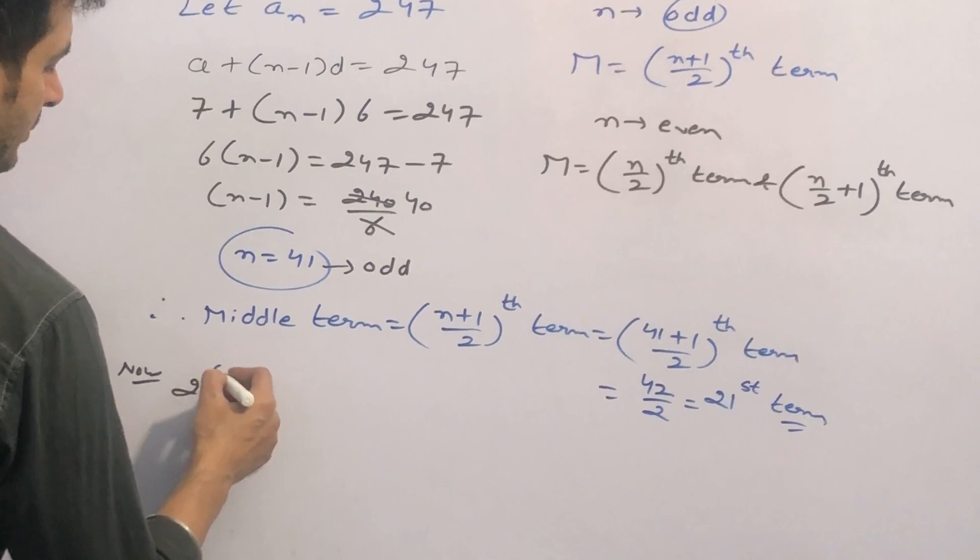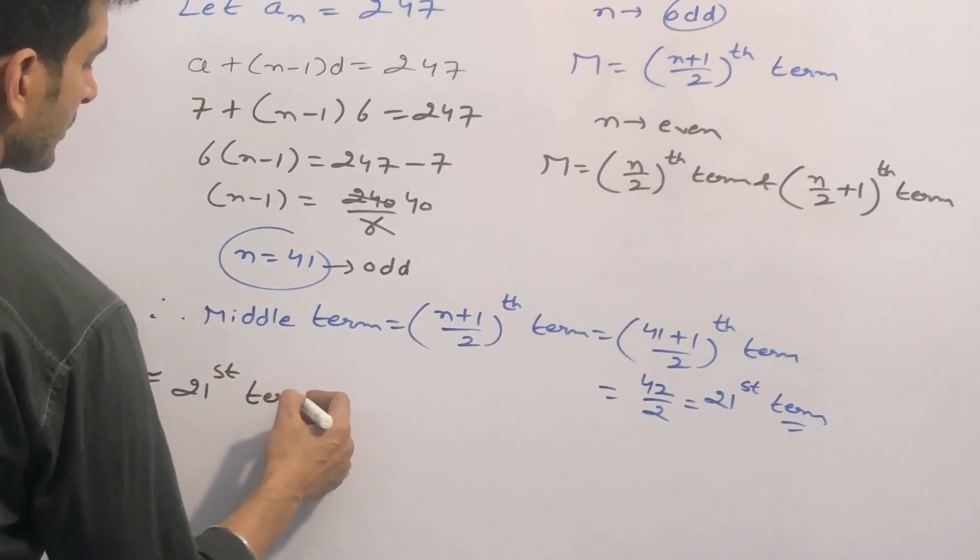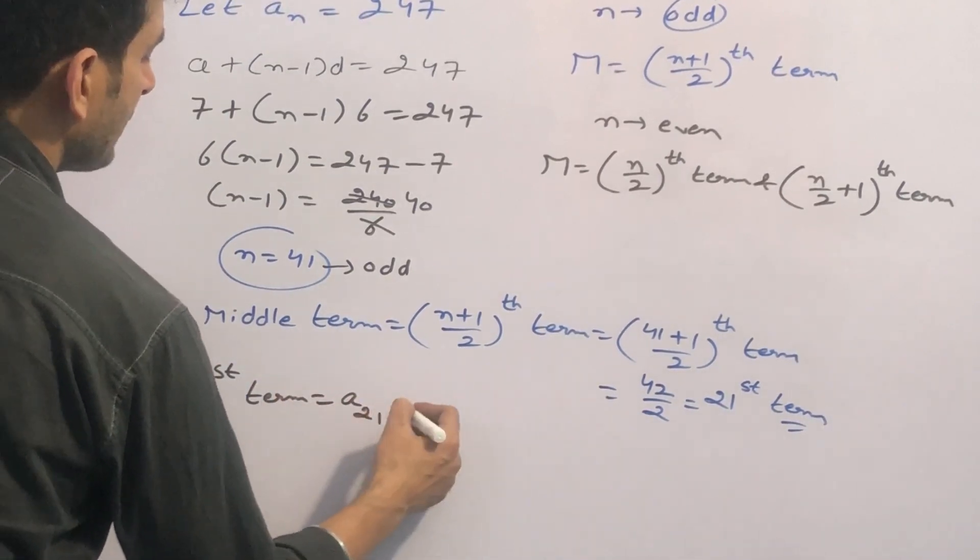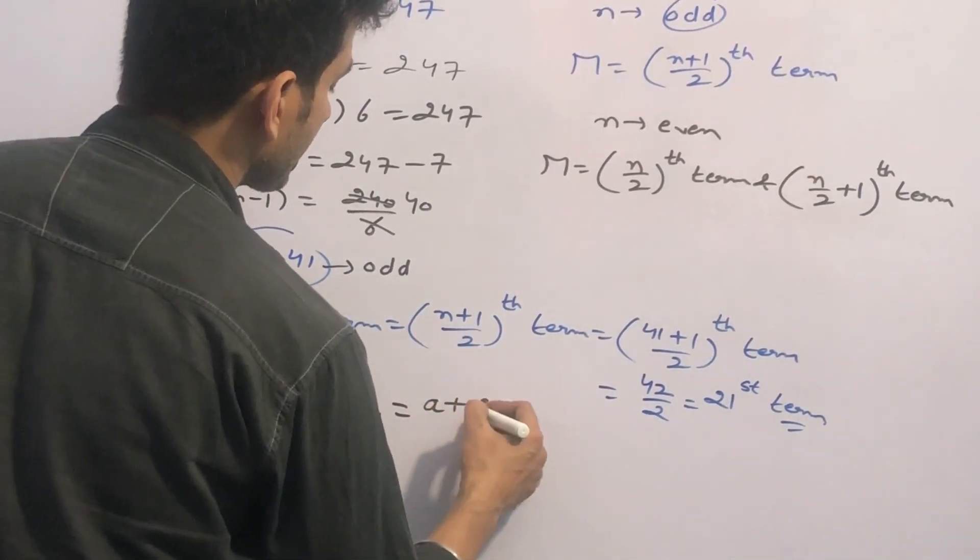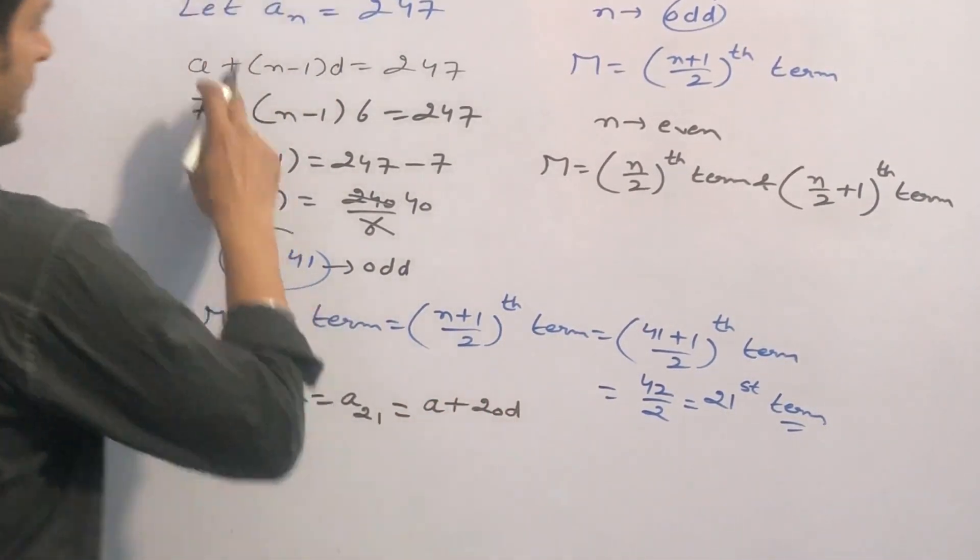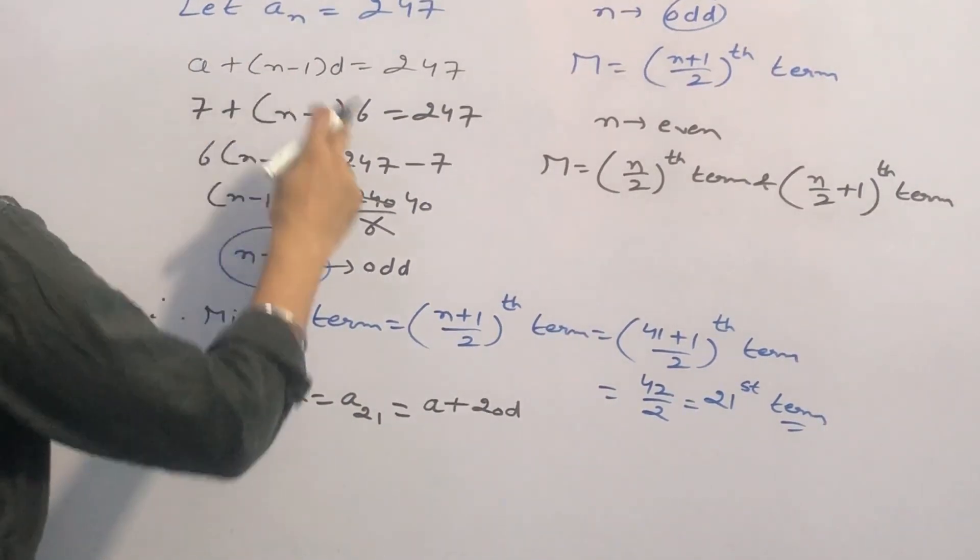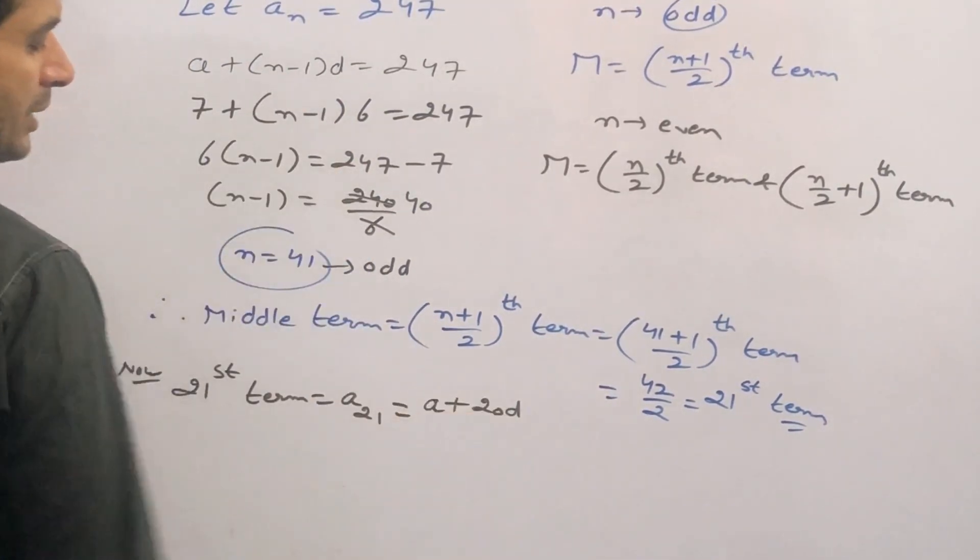Now 21st term, which will be equal to A21. A21 means A plus 20D. Why? Because An equals A plus N minus 1 D. In place of N is 21, 21 minus 1 is 20.